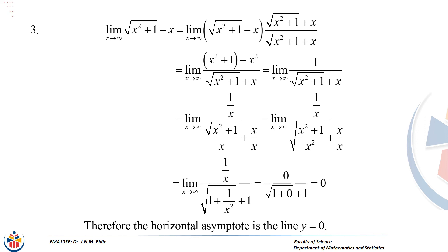For number three, we don't have a rational function or quotient — just a square root expression. First rationalize to get the expression into a form where the highest power of x can be found in the denominator. After multiplying out and simplifying, divide by x throughout, then take the limit. The answer is zero, so the horizontal asymptote is the line y = 0.